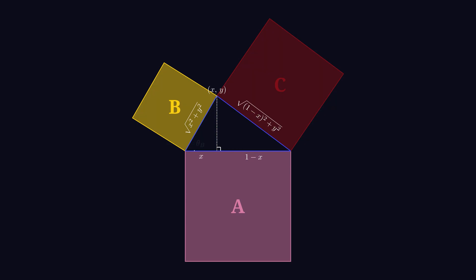But what about the rotation? Using SOH CAH TOA, you get angle theta b equals the arctan of y over x, and angle theta c equals minus the arctan of y over 1 minus x.